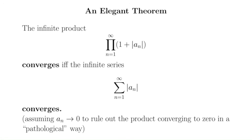I do want to mention that there's an elegant theorem that relates infinite products to infinite series. The theorem says that the product of (1 plus aₙ) terms will converge if and only if the series of aₙ converges. In other words, the exact rate at which the aₙ need to approach 0 for the series to converge is the exact rate at which the factors need to approach 1 for the product to converge. You can prove it using logarithms, and it's a great little result that's not as well known as it should be.